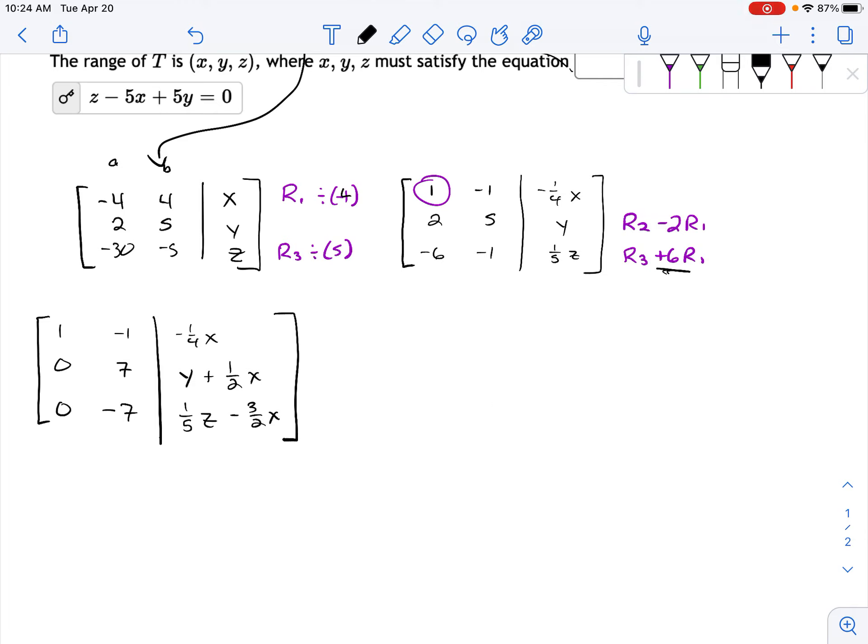All right. Okay, now this is fortunate. We've got a seven here and a negative seven there. So my next operation is just going to be row three plus row two. And I'm not even going to write the rest of the matrix. When you do row three plus row two, you get zero, zero,